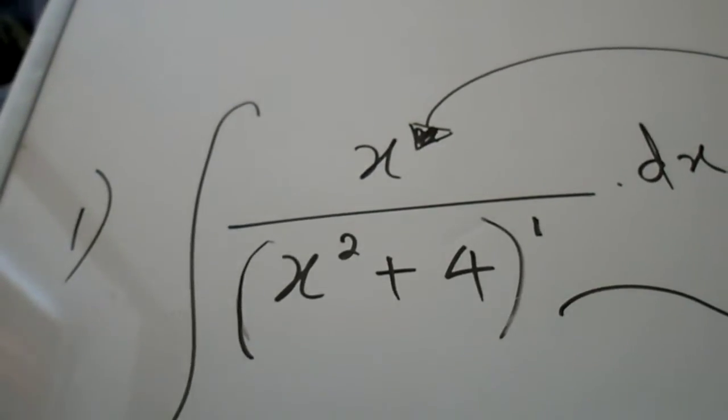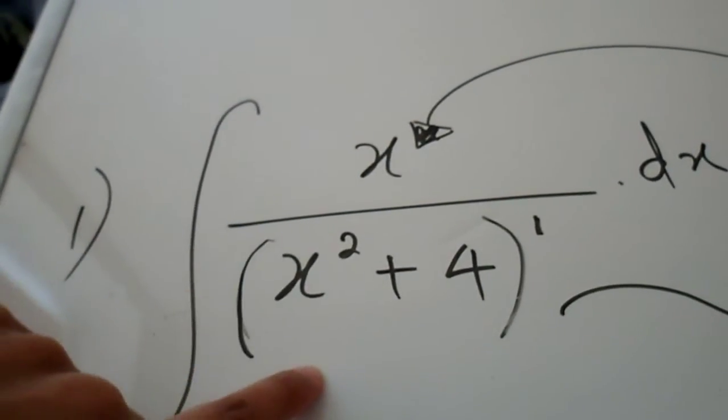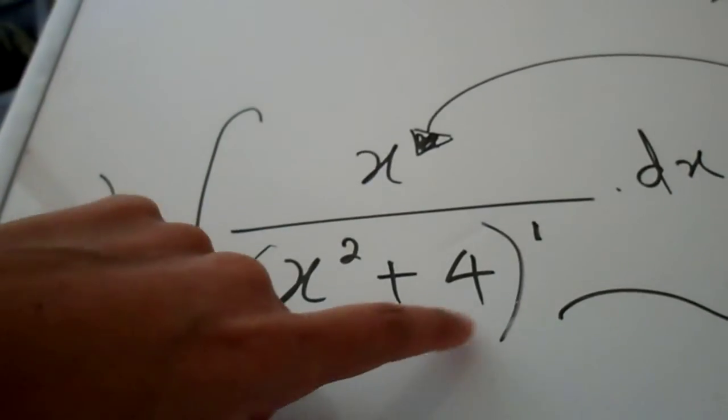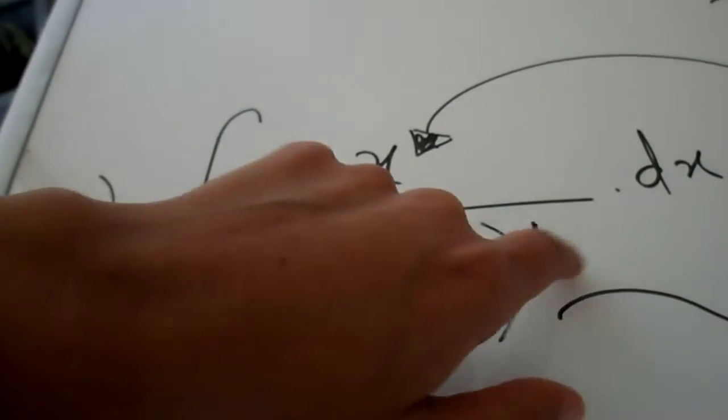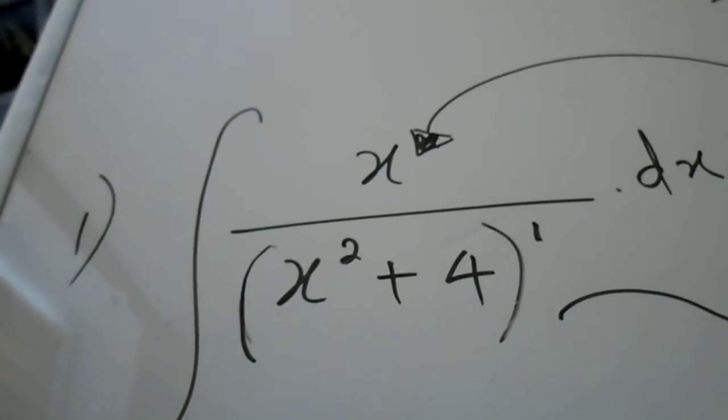So you have an algebraic function here in the numerator and an algebraic function in the denominator. Now if you have a denominator involved always test and check whether the overall power is equal to 1. In this case the overall power is indeed equal to 1.